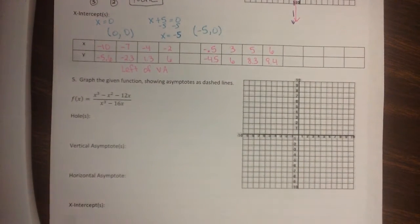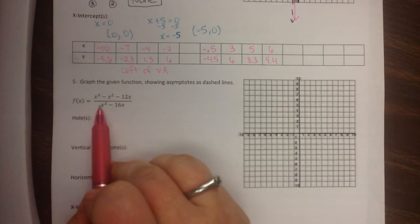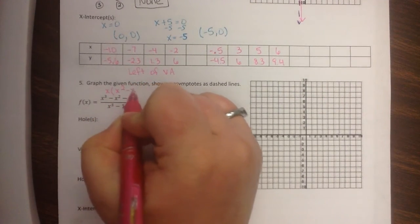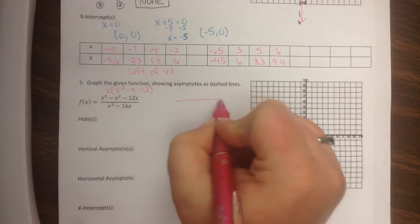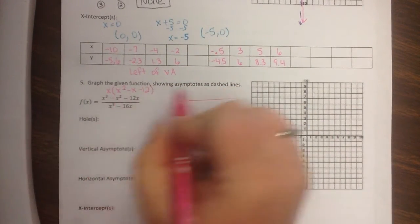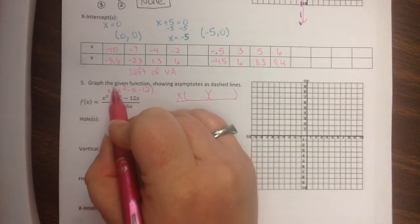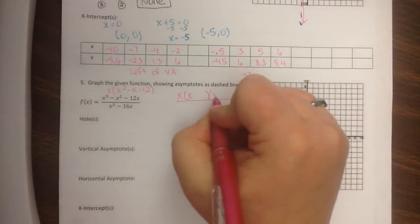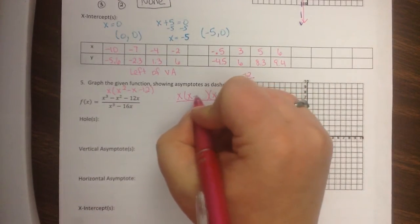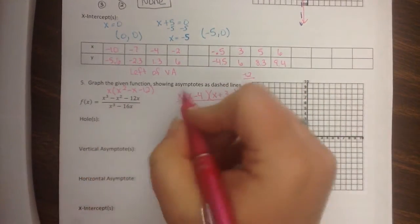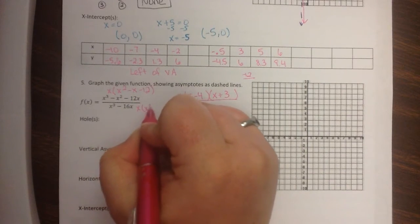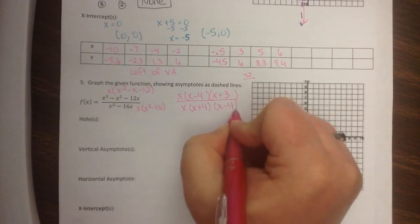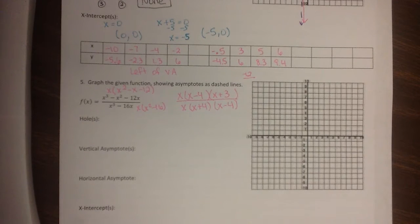Next one — same thing. I have a rational function because I have x's in the numerator with degrees bigger than 1, so I have to factor. I have a GCF of x, and now I have a trinomial, so I factor with the ac method. a is 1, c is negative 12, so I need factors of negative 12 that give me negative 1 — that's negative 4 and 3. In the denominator, I also have a GCF of x, leaving x squared minus 16, which is a difference of squares: (x + 4)(x − 4).